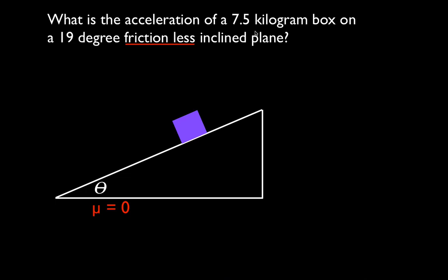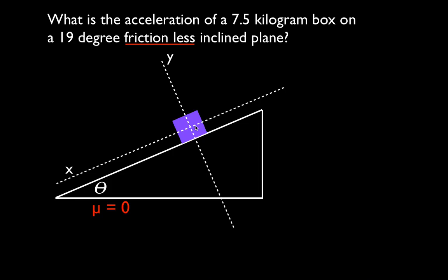The first thing we're going to do is draw in our x and y coordinate system. The x-axis is drawn parallel to the inclined plane, and the y-axis is drawn through the object perpendicular to the x-axis. I have x positive pointing down the slope because when we release this object, it's going to slide down the inclined plane to the left — it will accelerate. I like to have it accelerate in the positive direction. You could call this x negative and you would just get a negative acceleration.